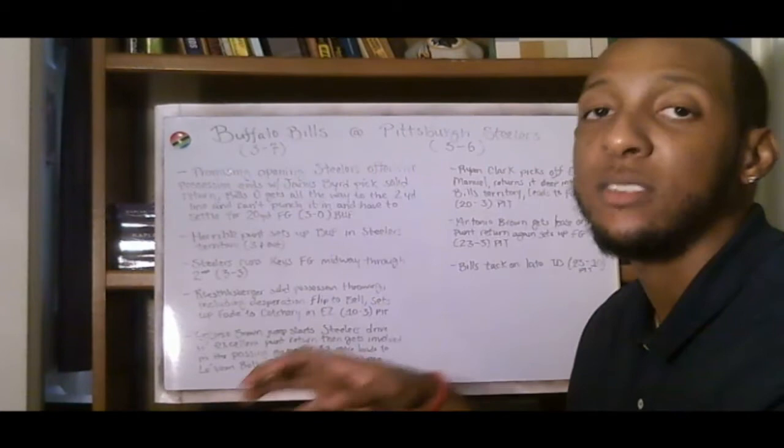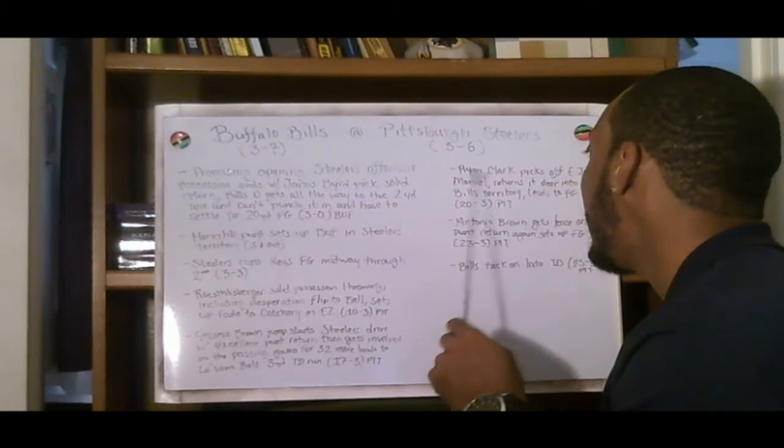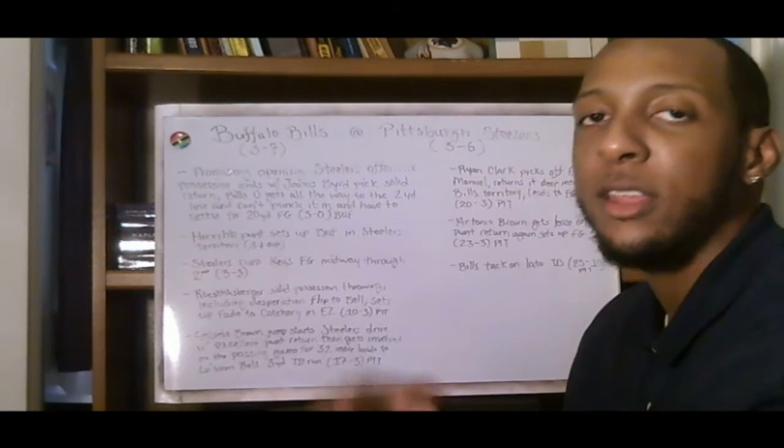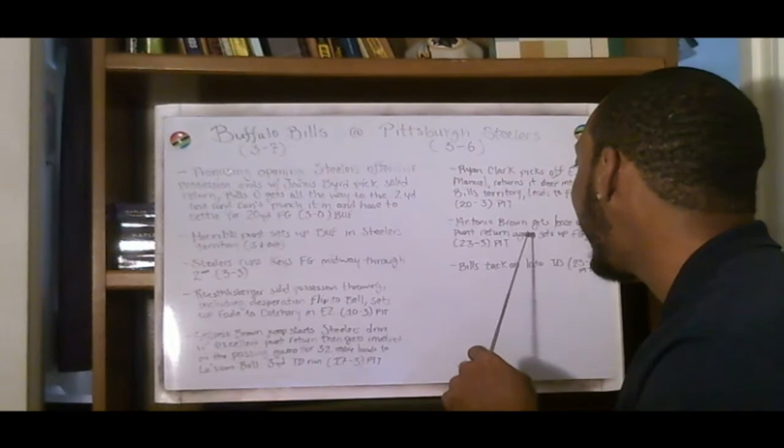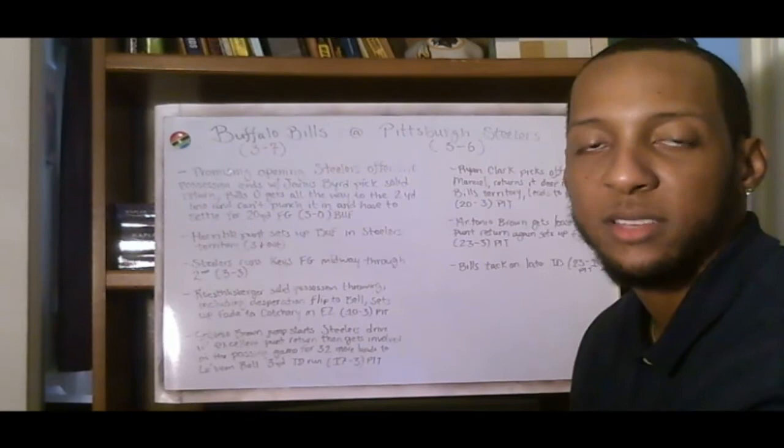Ryan Clark picks off EJ Manuel, returns it deep into Bills' territory, leads to a field goal, it's 20-3. Now you're just piling on, you're making sure that you put your stamp on this victory. Antonio Brown gets loose on a punt return again, sets up a field goal, 23-3. This game is all but over at this point. Bills tack on a late touchdown to make it 23-10, but that's your final score in this game. Steelers take care of business at home, 23-10.